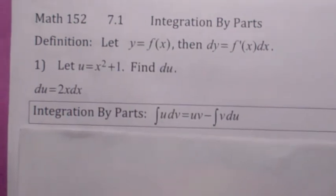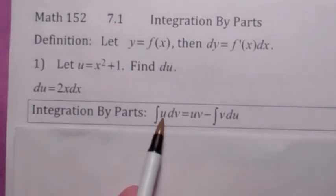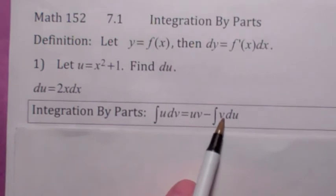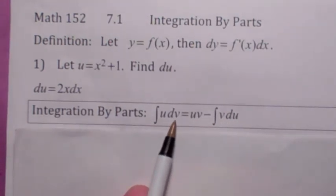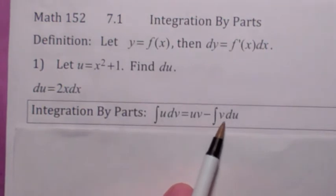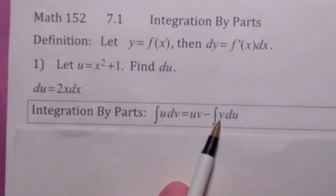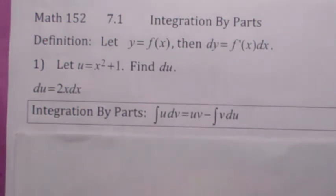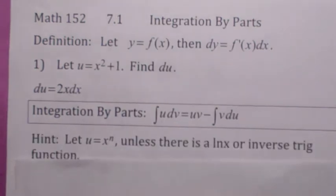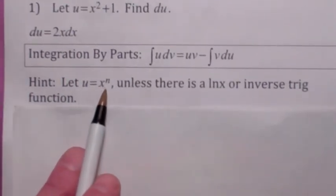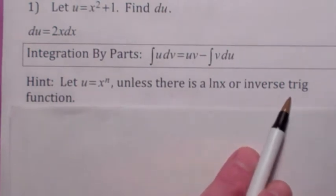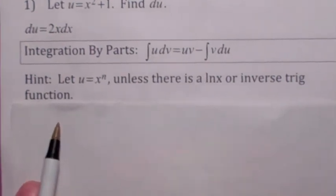Integration by parts works like this: it allows you to change the integral from one form into another. One function will be your u, the other will be your dv, and perhaps the resulting integral might be easier to compute. The trick to this technique is figuring out which function is u and which is your dv. My hint — and this works in a lot of cases — let u equal x to the power, unless there is a natural log or an inverse trig function present.